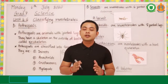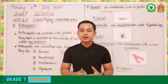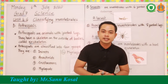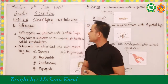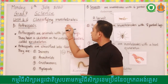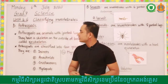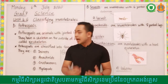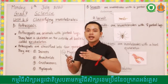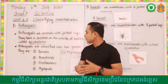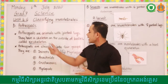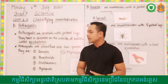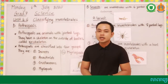Welcome to our last episode. I'm going to do a quick review. What have you learned today? The lesson is about classifying invertebrates, and we studied section B - arthropods. Arthropods are animals with jointed legs, where the body has the legs jointed together, and they have a skeleton on the outside of the body called an exoskeleton.